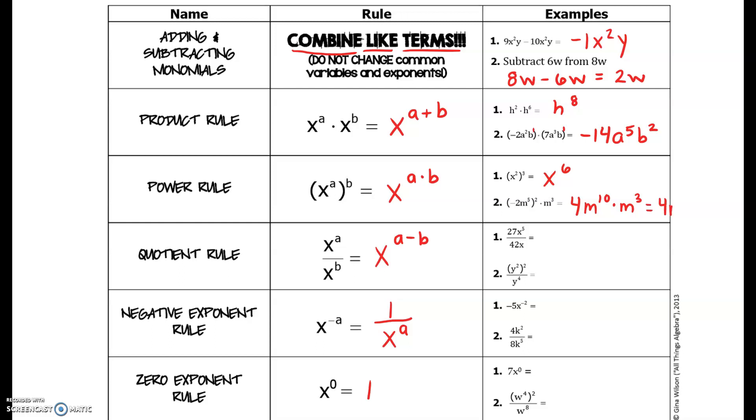Now our quotient rule, as we are dividing. Again, I keep encouraging you, if you have not already, download that TI-84 on your Chromebook. 27 over 42 will reduce; they are both divisible by three, so the fraction becomes nine over fourteen. And you will subtract the exponents, so five minus one would equal x to the fourth.